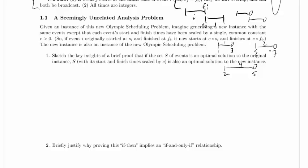Okay, so if event I originally started at SI and finished at FI, it now starts at C times SI and finishes at C times FI. So if we were to scale by like 5, then this would become 5, this would become 15, this would become 10, 25, 25, and 35. Which doesn't really make a lot of difference. I mean, 10 is still between 5 and 15. Effectively, I can draw these exactly the same and just imagine that the scale has shrunk, the scale has gotten smaller.